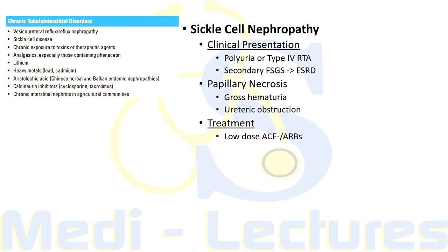Sickle cell nephropathy occurs due to sickling of RBCs in the relatively hypoxemic and hypertonic medullary vasculature, presenting with polyuria due to decreased concentrating ability or type 4 renal tubular acidosis, years before significant nephron loss. Later, development of focal segmental glomerulosclerosis leads to end-stage renal disease. Papillary necrosis is a characteristic feature, presenting with gross hematuria or ureteric obstruction. Treatment includes low-dose ACE inhibitors or ARBs; nephrology opinion is compulsory.